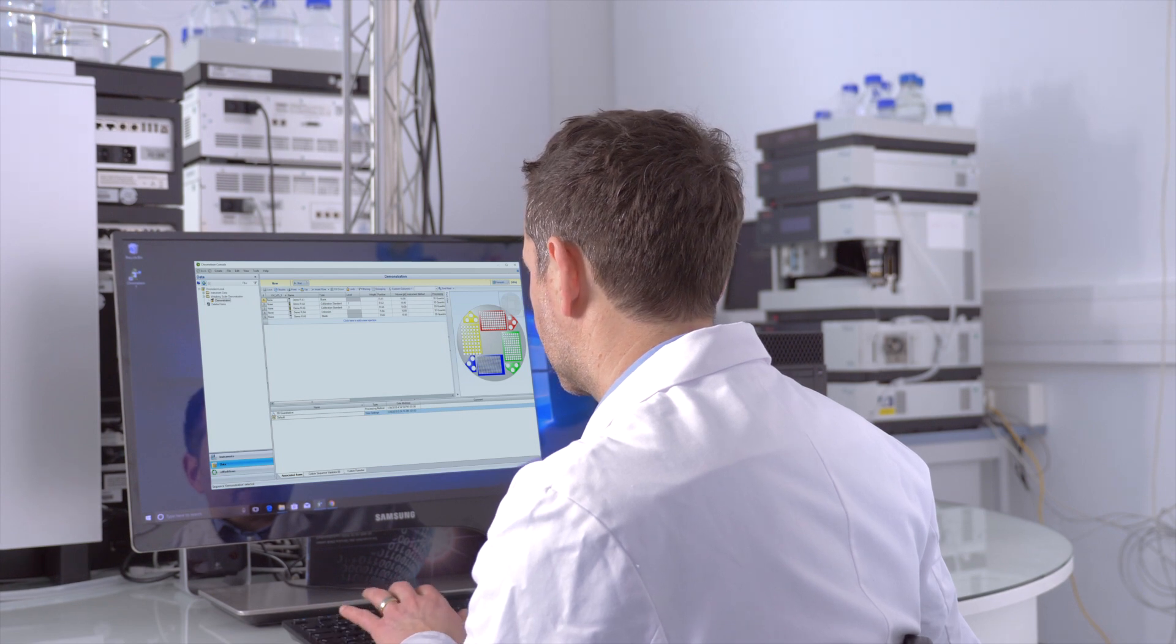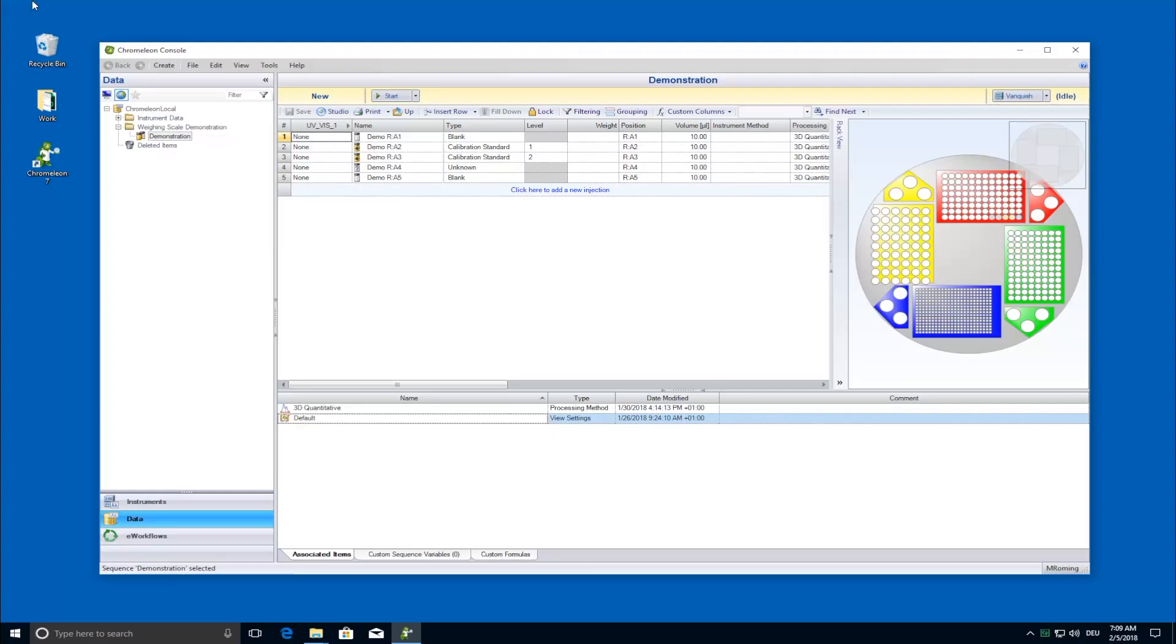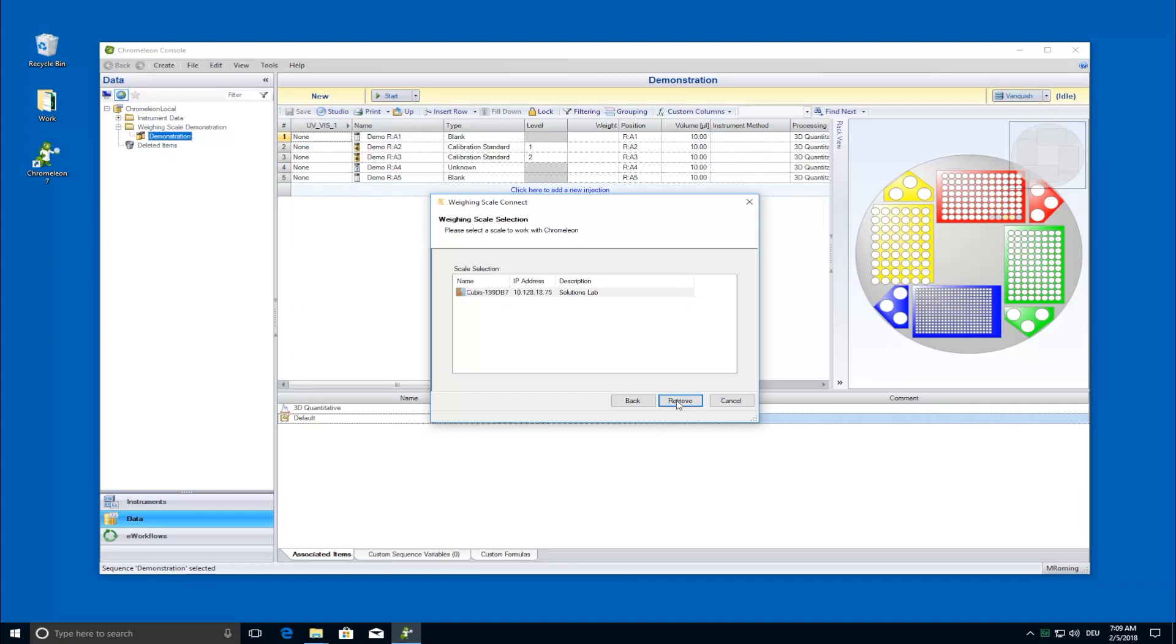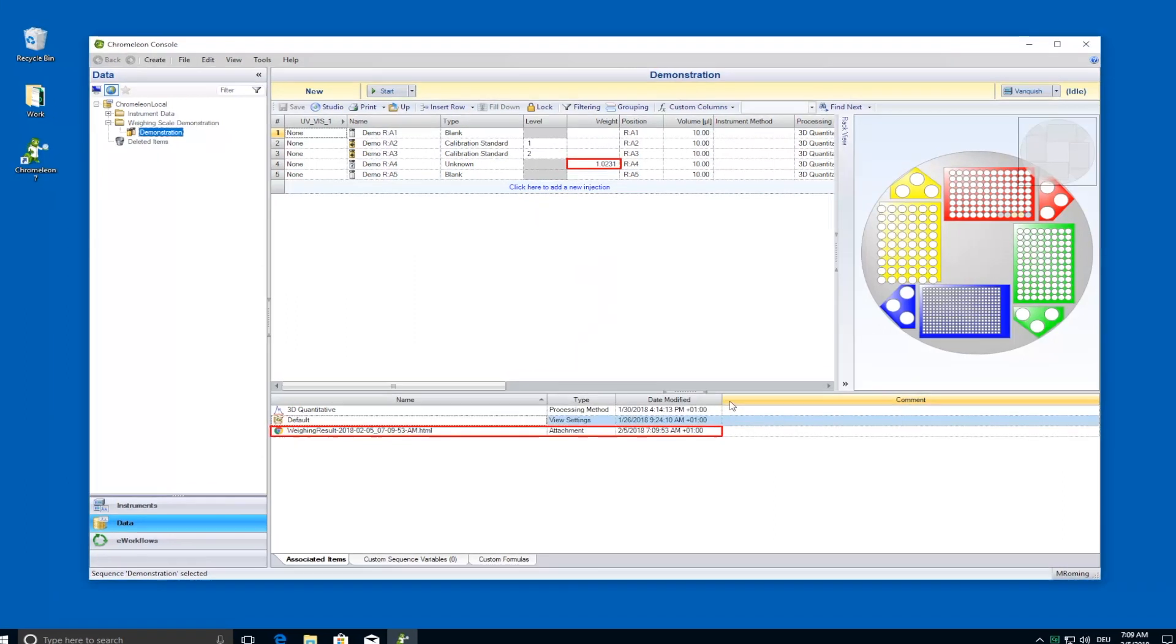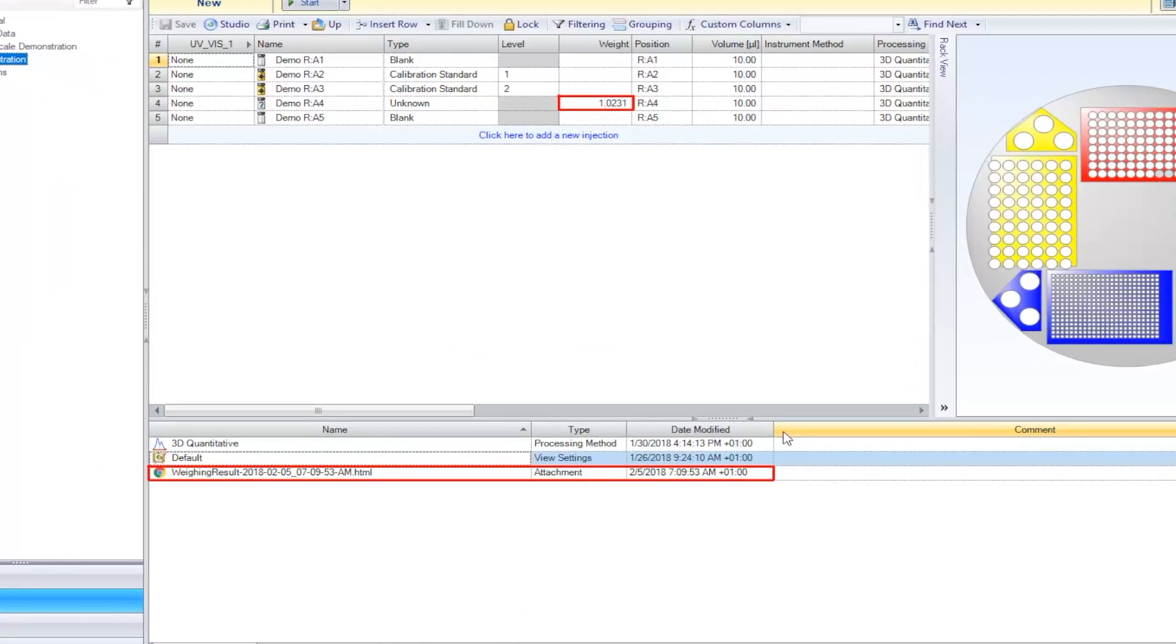Once the weighing is finished, you can retrieve your weighing results in the Chromelion CDS. The actual concentrations are entered with corresponding units to the component table in the associated processing methods. The results are automatically added to the sequence.